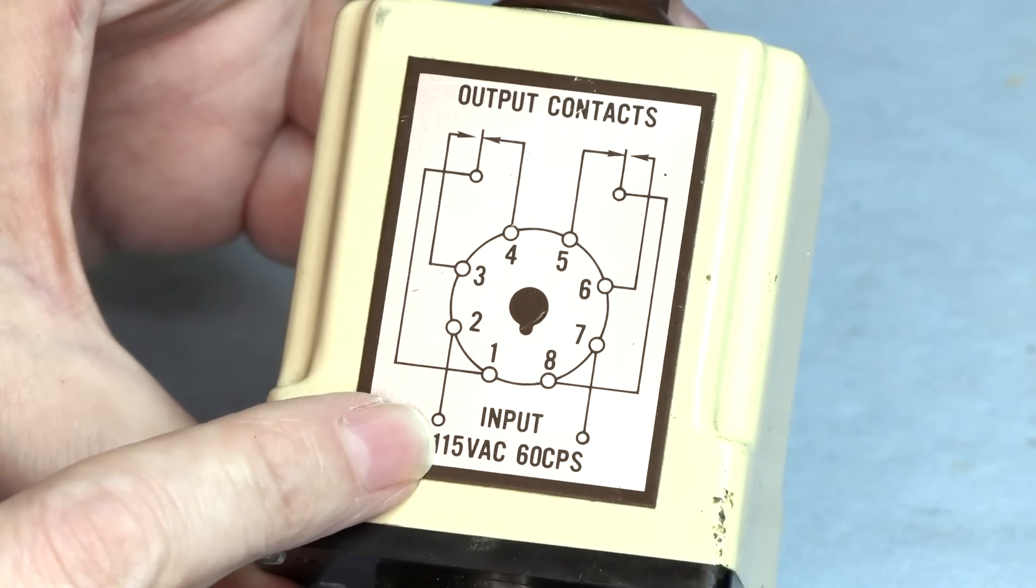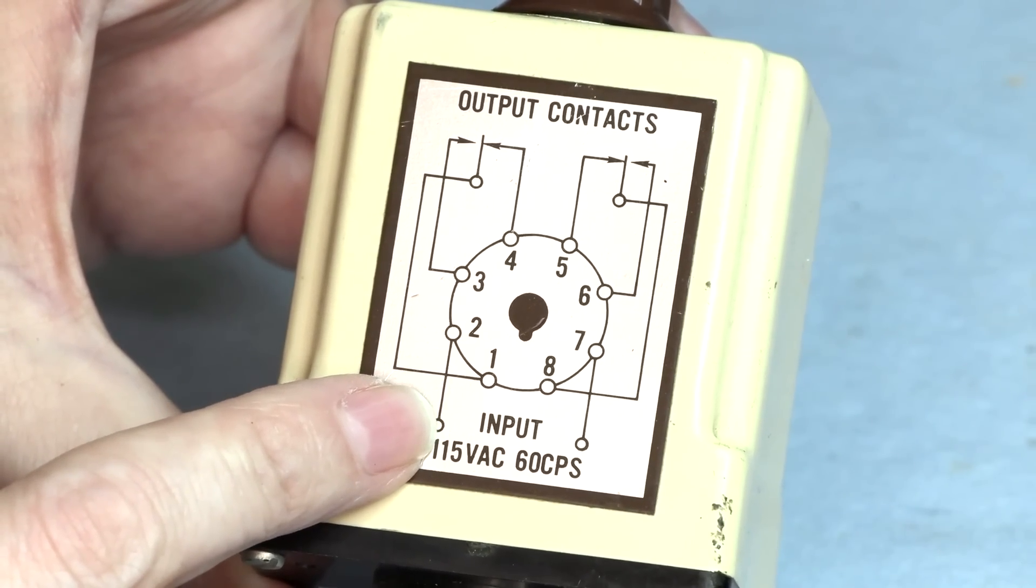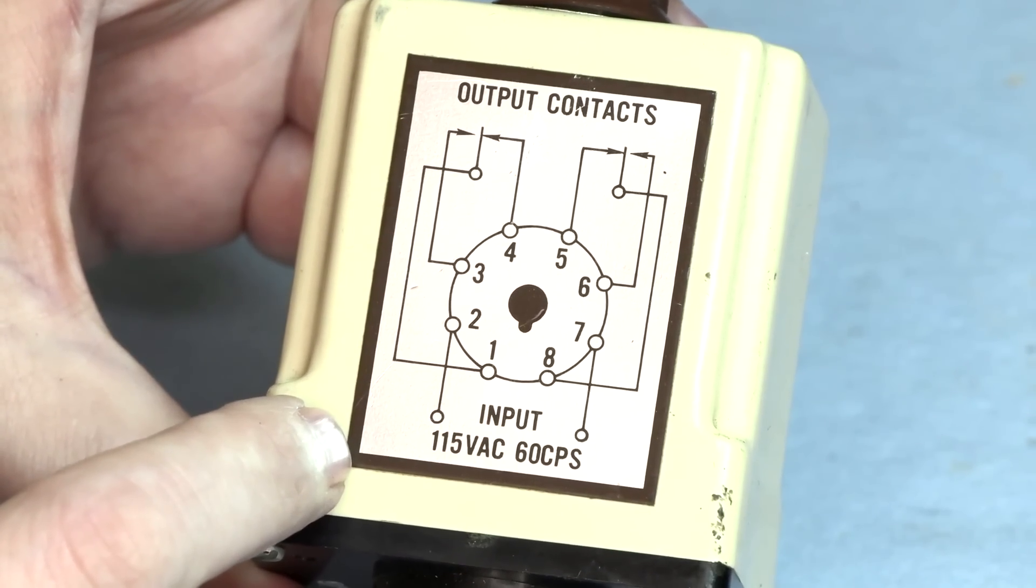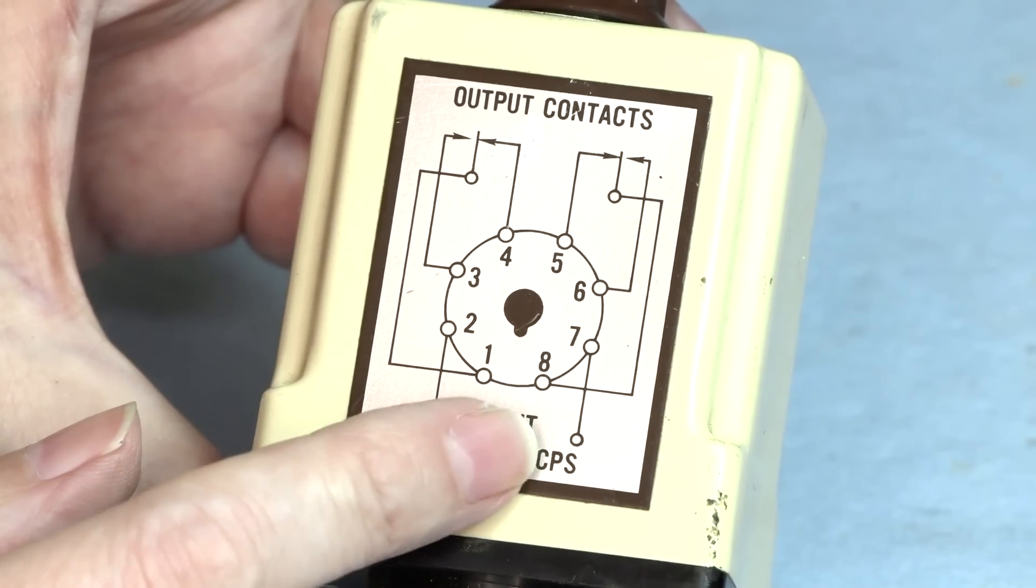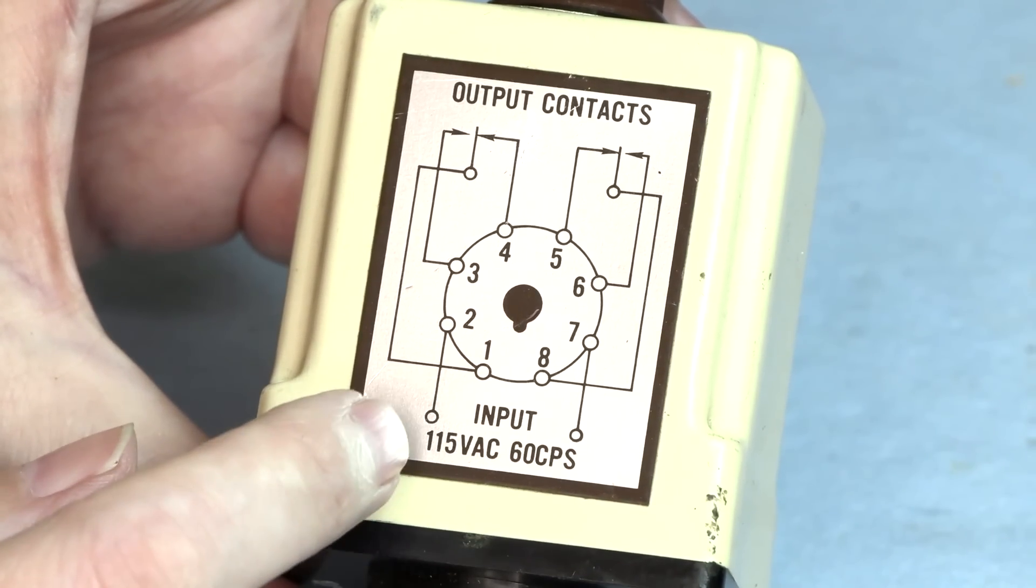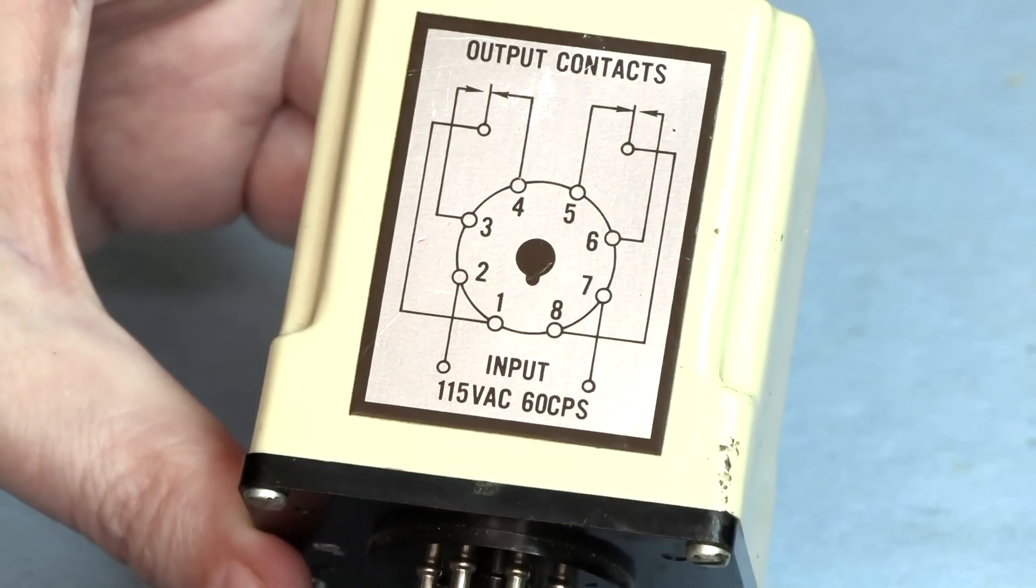So, pretty simple. When power is applied, the timer begins, and I guess to reset it, you just take the power off and it will reset, and then you've got another time cycle.